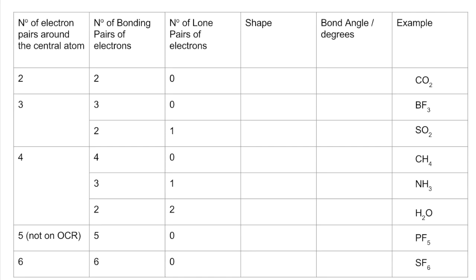We've got this table here with all the scenarios in. I've got five electron pairs in there even though it's not on OCR, just to complete the table. And you can see down the right hand side I've got some examples. So the first one is two electron pairs in the valence shell, and they're both bonding. We get a linear shape and 180 degree bond angle. An example for that is CO2.